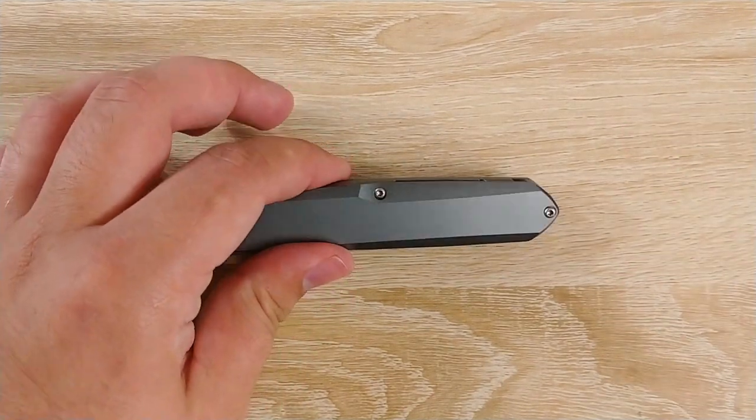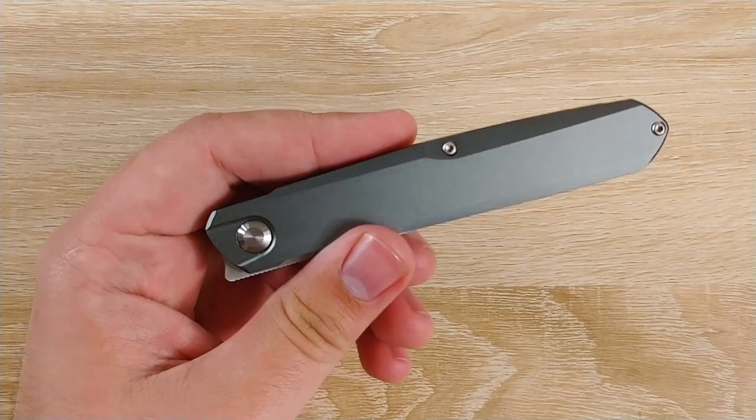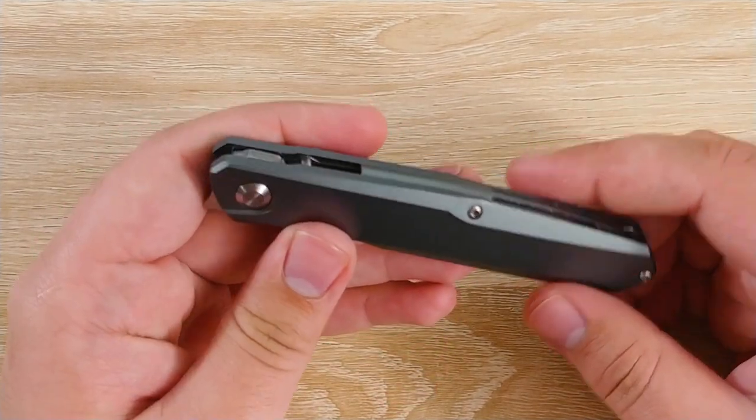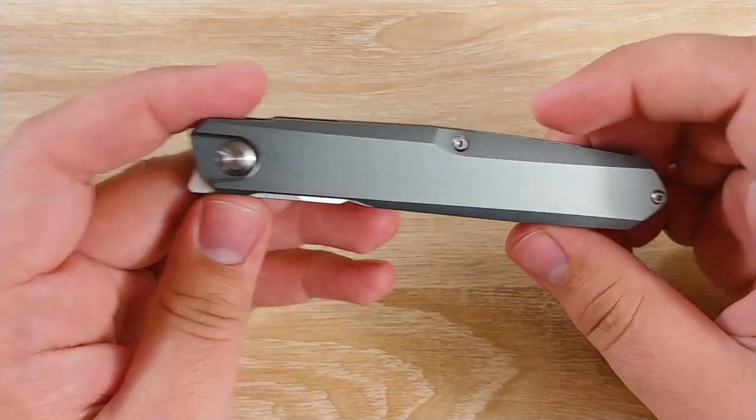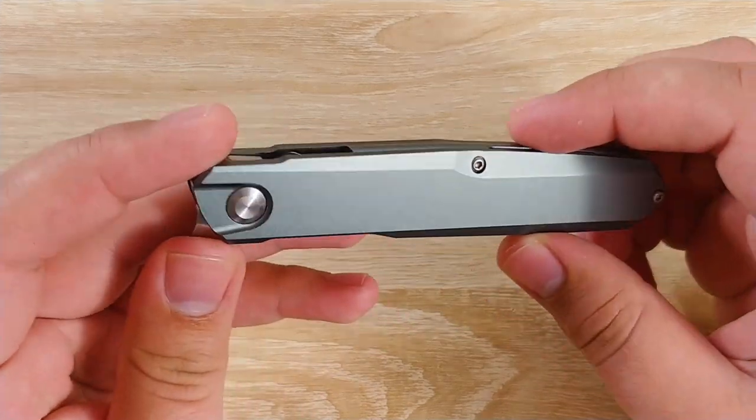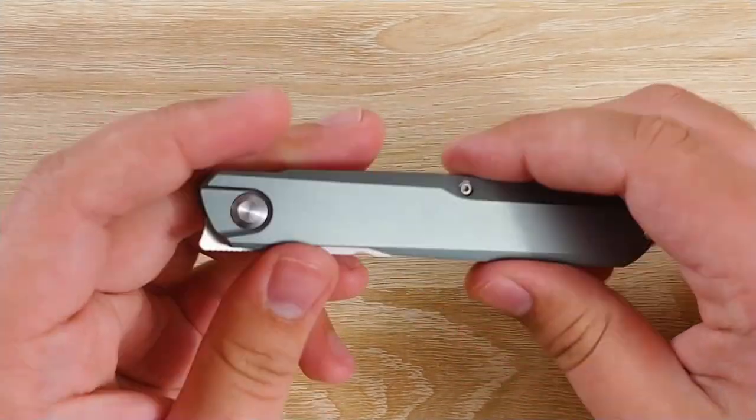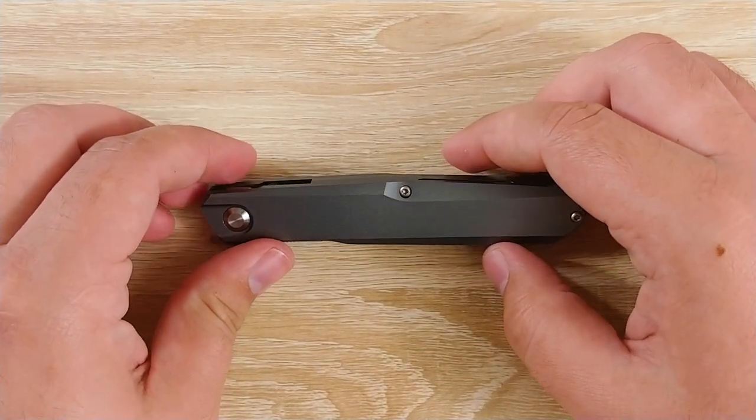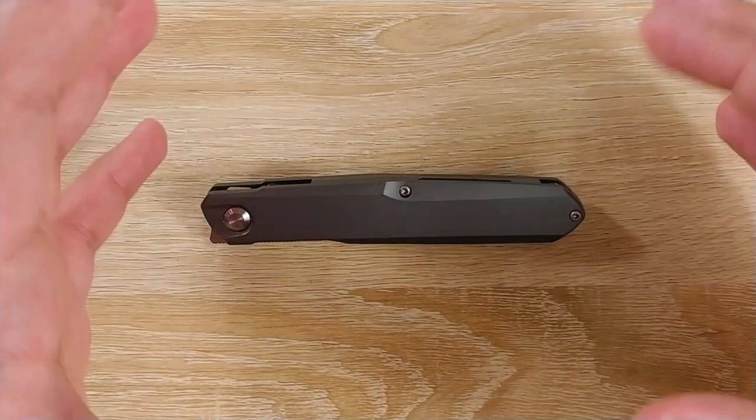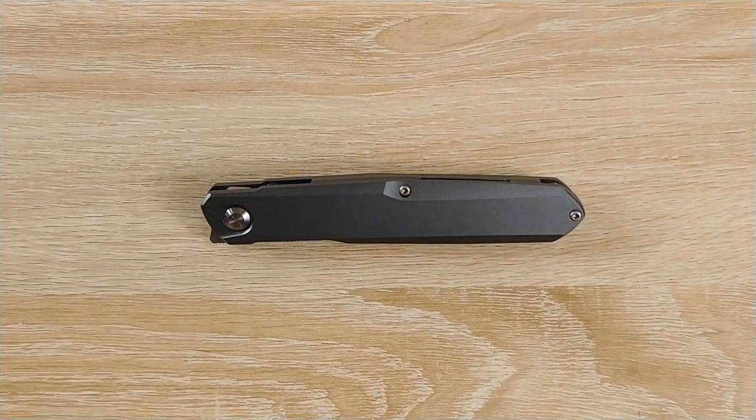Hey everybody, Jake here, and today we're going to take a look at the Real Steel Metamorph. This is a pretty interesting entry-ish level front flipper from Real Steel out of China. Very compelling knife. A lot that I like about it, but we'll go ahead and go over all of that, do some size comparisons, everything, and I'll give you a conclusion of what my overall thoughts are on this knife.